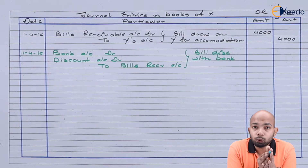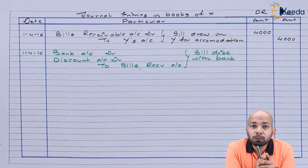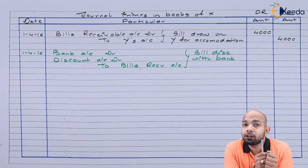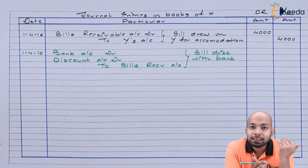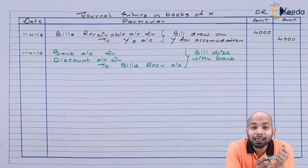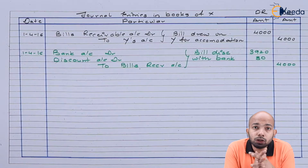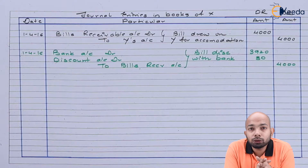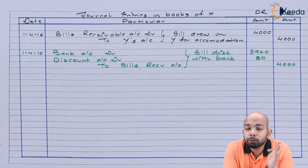Rs 240 divided by 12 gives Rs 20 per month. The tenure here is 4 months, so 20 × 4 gives a discount of Rs 80 taken from the bank. Whatever balance remains is in the bank account. Now, half of the proceeds were sent to Y — out of Rs 4,000, Rs 2,000 was sent to Y. But out of that Rs 2,000, the discount will be a part of that, so whatever balance is left will actually be sent to his bank account. Out of Rs 2,000, Rs 40 discount will be borne by both X and Y each.